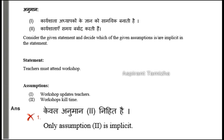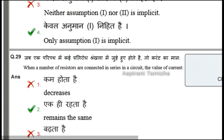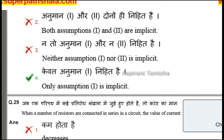Let's see the statement and assumption — it is statement and conclusion, it's the statement and assumption. Two questions are coming. Consider the given statement and decide which of the assumptions are implicit in the statement. The statement is: teachers must attend workshop. Assumption one: workshop updates teachers. Assumption two: workshop kills time. Workshop updates teachers is the correct point — statement one is implicit. Only assumption one is implicit.